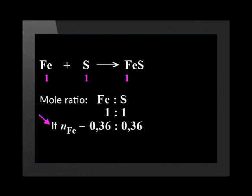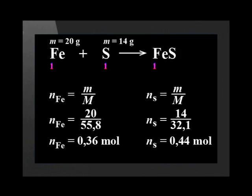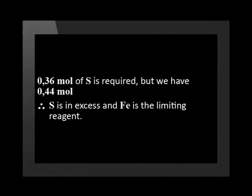0.36 moles of iron would require 0.36 moles of sulfur to react completely. But if we go back to the original equation, we can see that whilst 0.36 moles of sulfur is required to react completely with the iron, we actually started with 0.44 moles of sulfur. So 0.36 moles of sulfur is required, but we have 0.44 moles of sulfur. There is more sulfur than we need, so sulfur must be the substance in excess. This makes iron the limiting reagent.